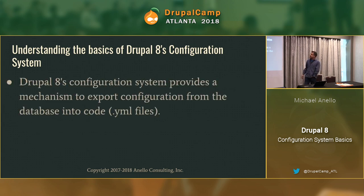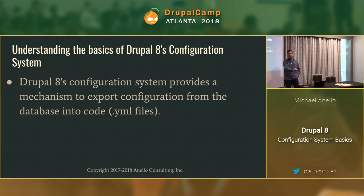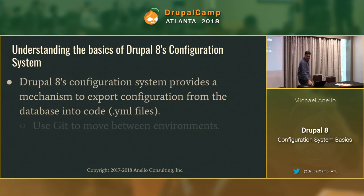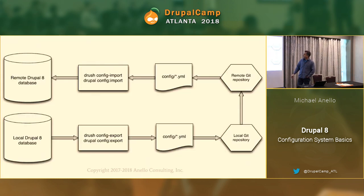The Drupal configuration system provides the mechanism to take configuration out of the database and put it into YAML files — then git add, commit, push, pull, and so on. On your local, you create a new content type, click click click, hit save — that goes into your database. Ultimately you want to get that up to dev. This slide is the one to remember.